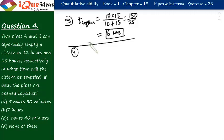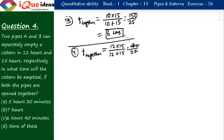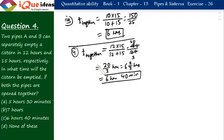Question number 4. Two pipes A and B can separately empty a cistern in 12 hours and 15 hours respectively. In what time will they empty it together? Here both workers are negative workers and the work is also negative — we have to empty. We still apply the same formula: time together = T1 × T2 ÷ (T1 + T2) = 12 × 15 ÷ (12 + 15) = 180 ÷ 27 = 20/3 hours = 6 hours and 40 minutes.